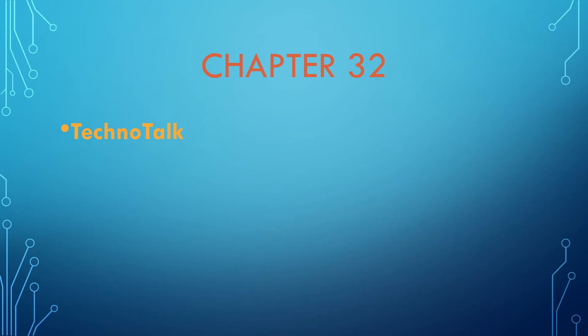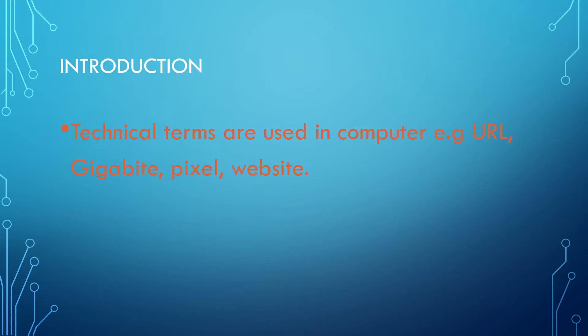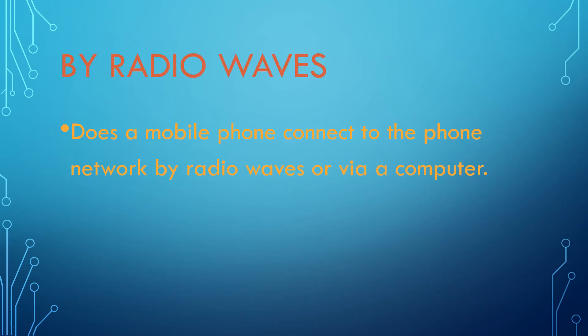Let us start Chapter 32: Techno Terms. What is techno? Students, we use many technical terms in computers, like URL, WWW, gigabyte, pixel, website, and webpage. There are many new terms for us. In this chapter we will study these technical terms which are used in computers, as nowadays we all are using computers.